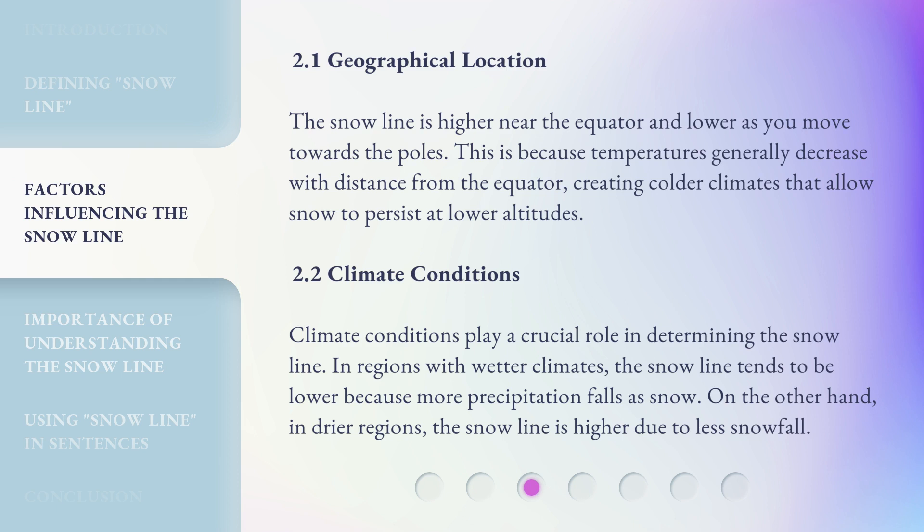Climate Conditions: Climate conditions play a crucial role in determining the snowline. In regions with wetter climates, the snowline tends to be lower because more precipitation falls as snow. On the other hand, in drier regions, the snowline is higher due to less snowfall.